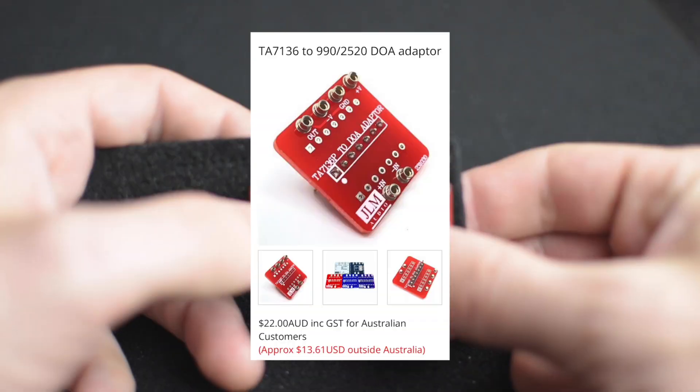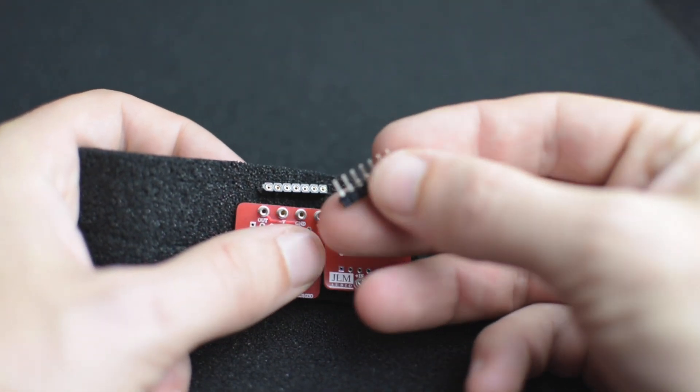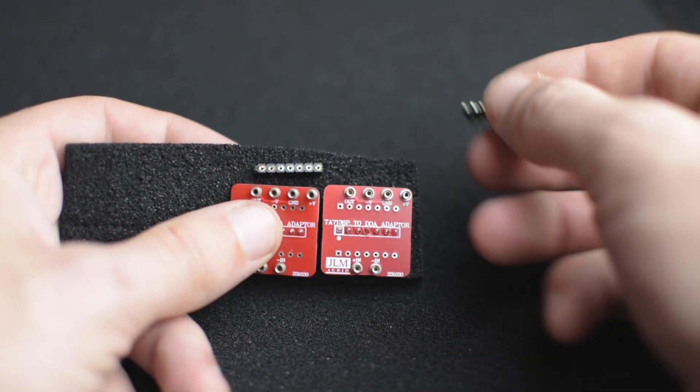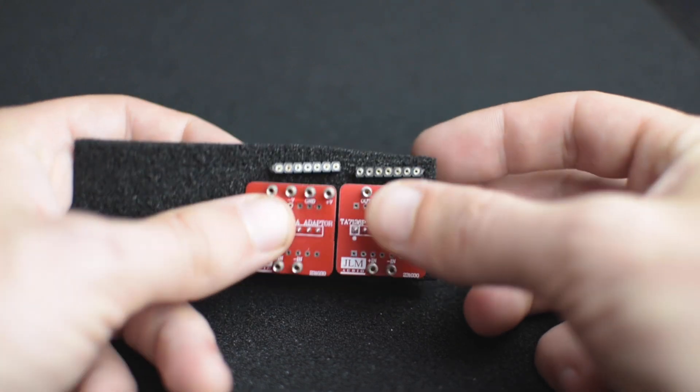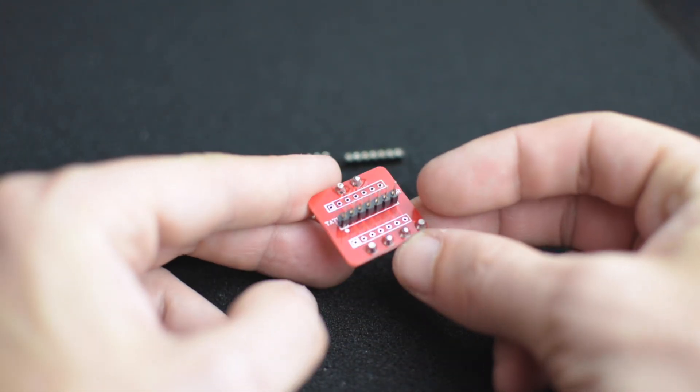JLM is based out of Australia. You can get these for about $13 US apiece plus shipping. They also contacted me and asked how I wanted the pins soldered or if I wanted them soldered at all. It comes with these really nice adapters for the ICs so you can put sockets in so you don't have to solder it every time you take it in and out.